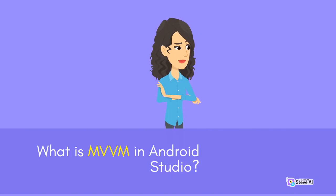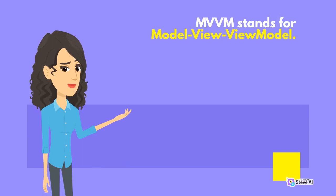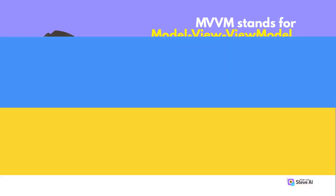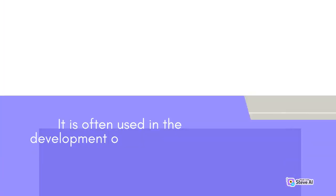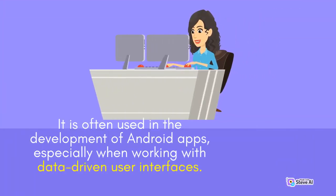What is MVVM in Android Studio? MVVM stands for Model View View Model. It is a design pattern that is used to structure code in a way that separates the representation of data from the logic. It is often used in the development of Android apps, especially when working with data-driven user interfaces.